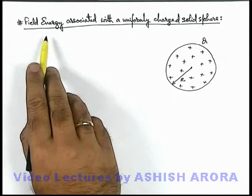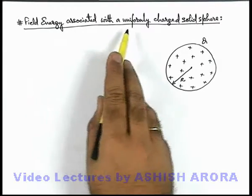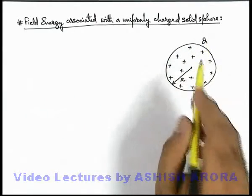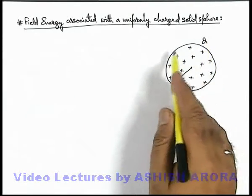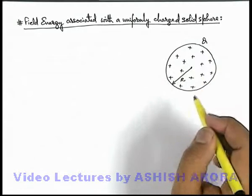Let's now calculate the field energy associated with a uniformly charged solid sphere. Here you can see this is a uniformly charged solid sphere of radius R and a total charge Q.